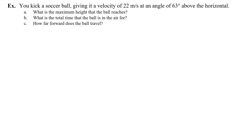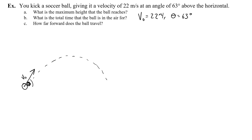You kick a soccer ball giving it a velocity of 22 meters per second at an angle of 63 degrees above the horizontal. What is the maximum height that the ball reaches? What is the total time that the ball is in the air? And how far forward does the ball travel? So let's start by drawing a picture. Here's the soccer ball kicked with initial velocity v0 at an angle theta. v0 equals 22 meters per second, theta equals 63 degrees. The trajectory is always going to be a parabola.